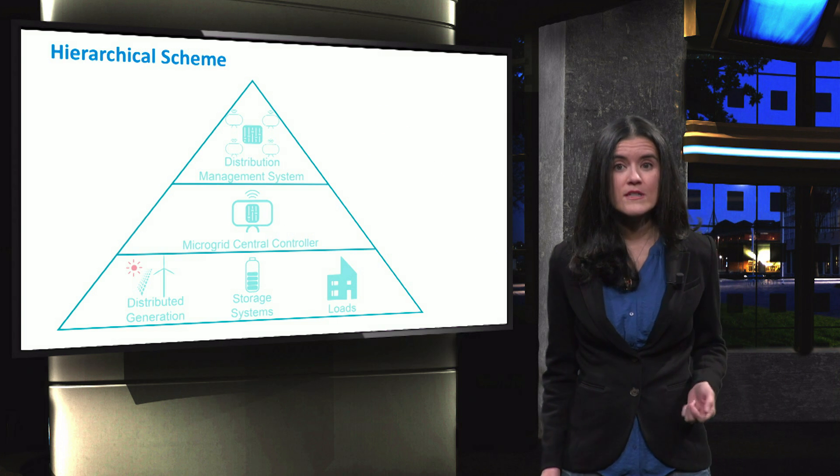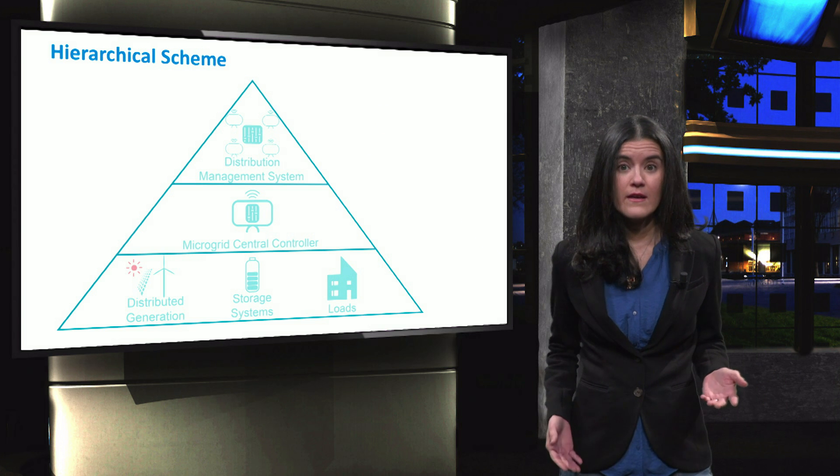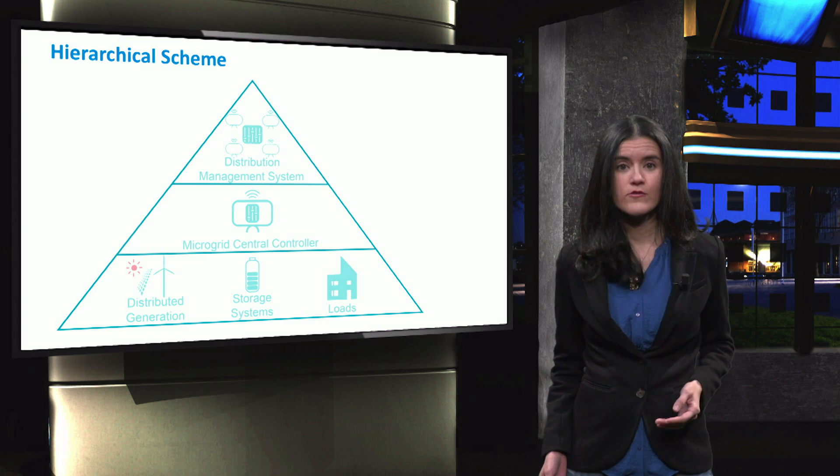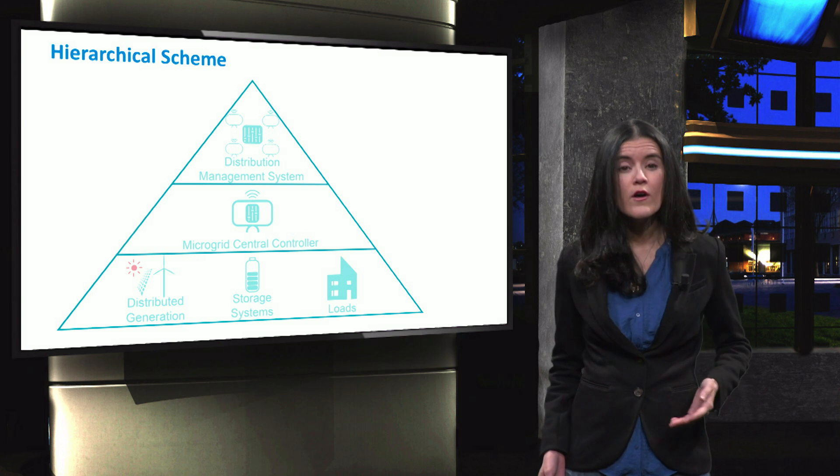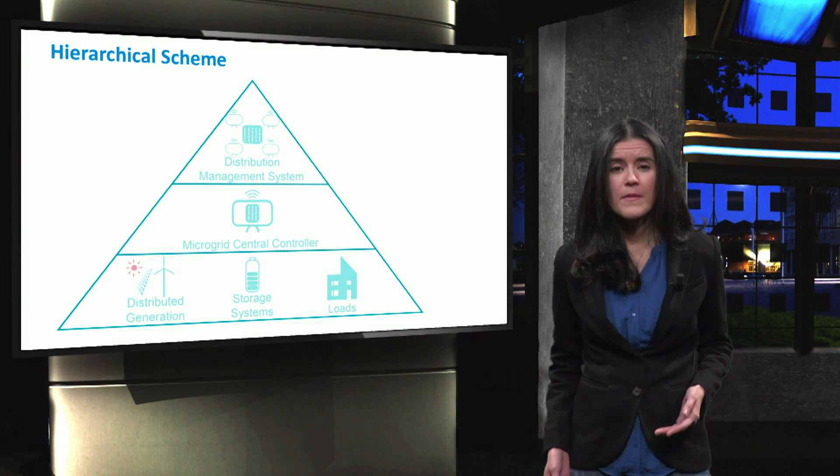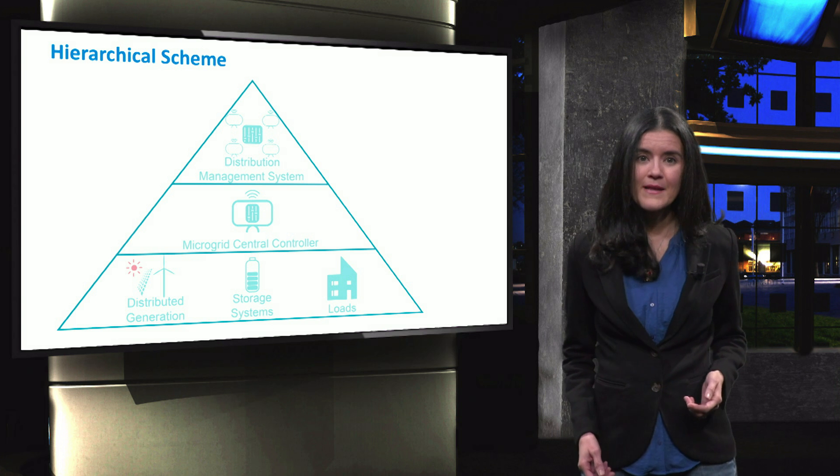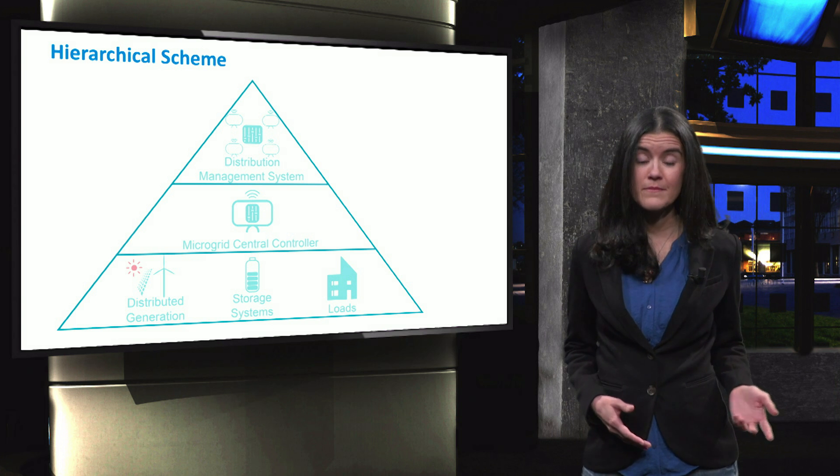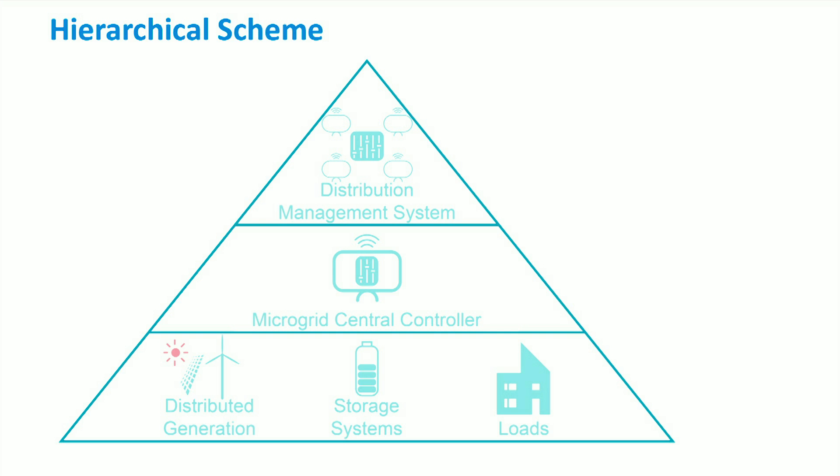We have seen that traditional control is hierarchical and it is divided into primary, secondary and tertiary control. A hierarchical control can also be implemented in microgrids, however, with some differences. Let's start describing it from the bottom. At the lowest level, where distributed generation, storage and loads are present, local control is responsible for the inner loop, outer loops and the implementation of droop control. This type of control is implemented in the power converters that interface the different components to the distribution grid.